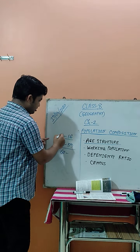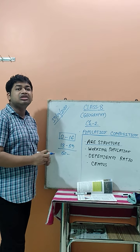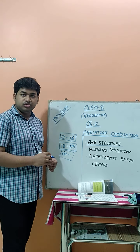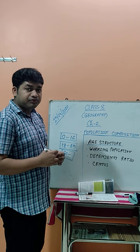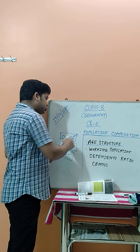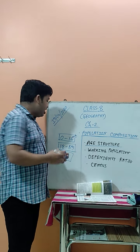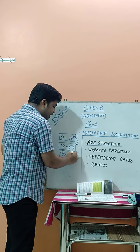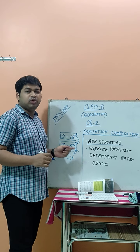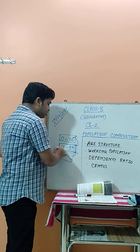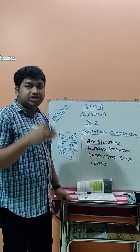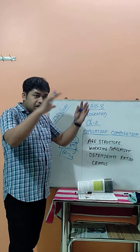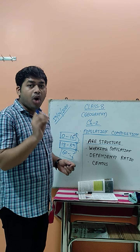The 0 to 14 age group is called the childhood stage. The middle group is called the mature stage. The last group, above 60, is called the old stage. Children cannot do work, and people above 60 are also not able to do work. So these two groups are totally dependent on the middle or mature stage — the working population, whose age is between 18 to 59 or 60.